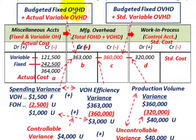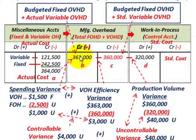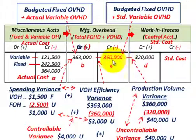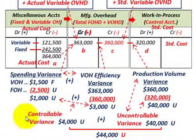We're going to calculate the budgeted fixed overhead plus the actual variable overhead amount, and then the budgeted fixed overhead plus the standard variable overhead amount. Those amounts will be moved into the work-in-process control account at the standard cost. Based on the differences, we'll determine our variances: a spending variance for variable and fixed overhead, a variable overhead efficiency variance, a production volume variance, and then our controllable and uncontrollable variances.